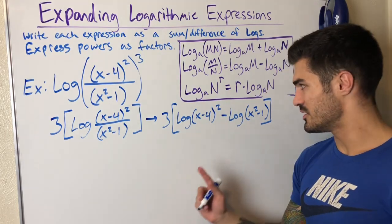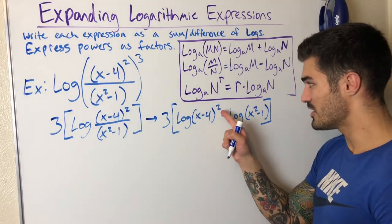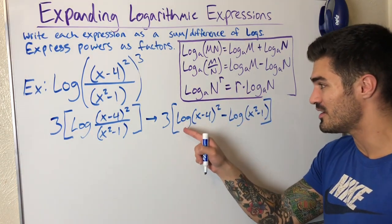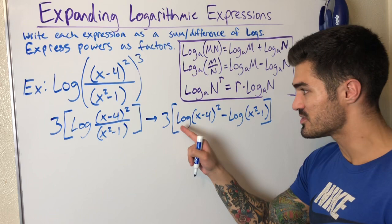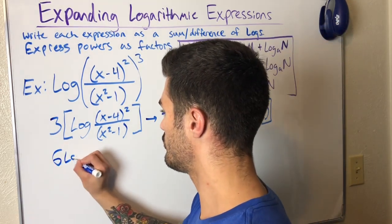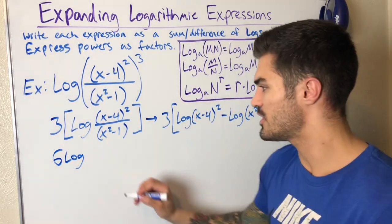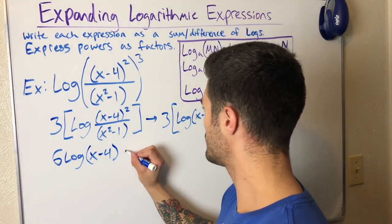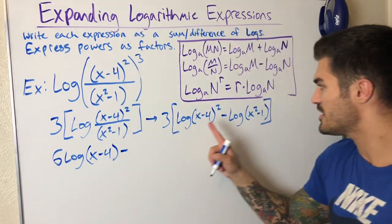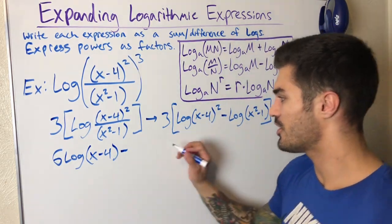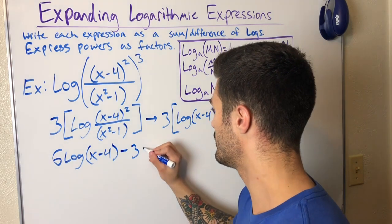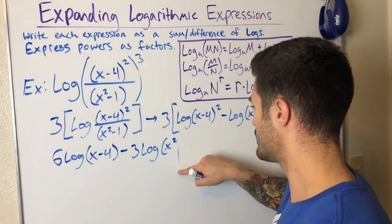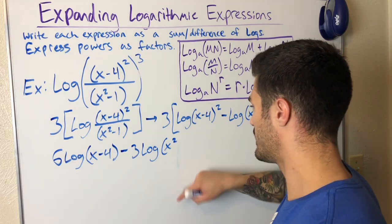So I'm going to do two steps at once here. I think y'all can handle this though. I'm bringing the two out in front. I'm using this property, bring the two out in front, and I'm going to distribute the three in. So that two times three becomes a six. I have six log x minus four minus, but that three comes in here as well, minus three times log x squared minus one. So six log x minus four minus three log x squared minus one.